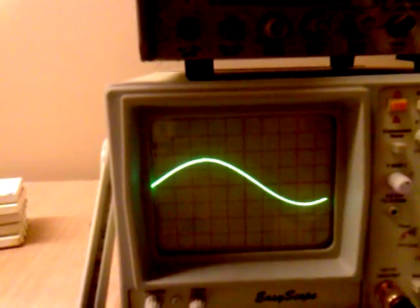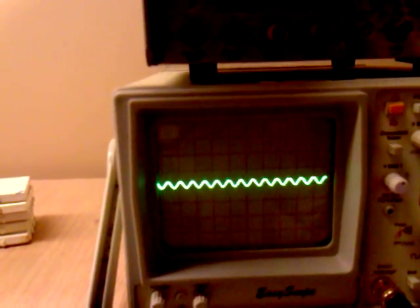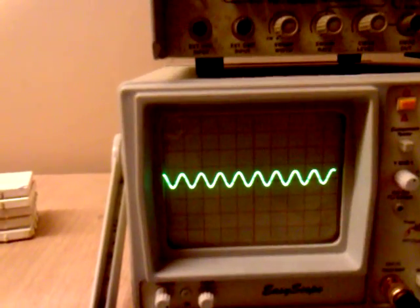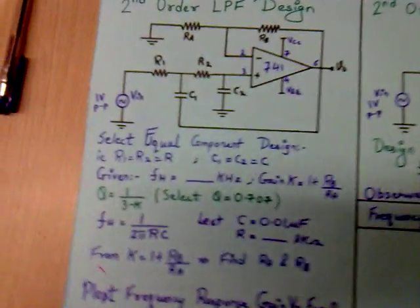As we increase the frequency, we can see that the output voltage decreases. It's a typical response of a low pass filter. The cutoff frequency in this case is 1 kilohertz.